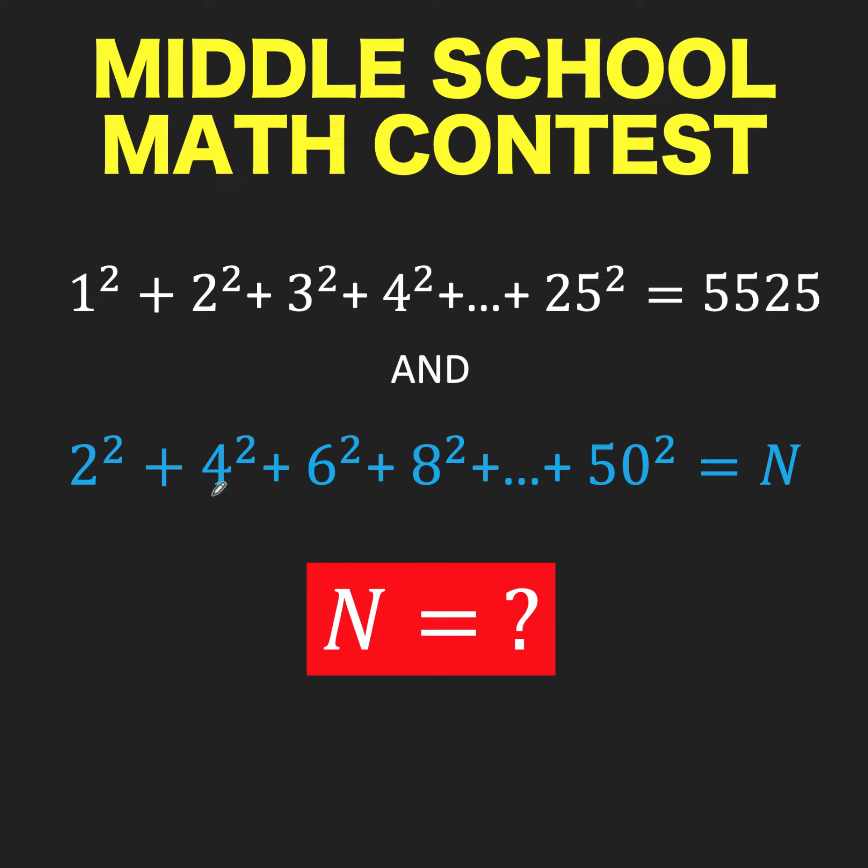We are also given the sum of the squares of consecutive even numbers from 2 to 50, denoted as capital N. The question is, what is the value of capital N? You can pause the video and see if you can solve this math contest problem.